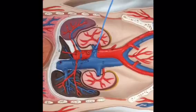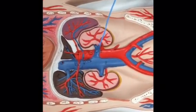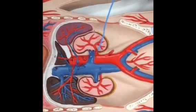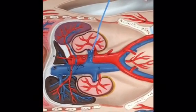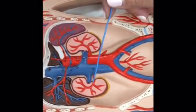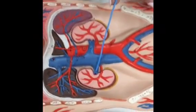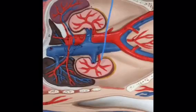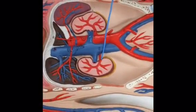You can see the renal vein here too — so renal artery, renal vein on one side, and renal vein, renal artery on the other side.